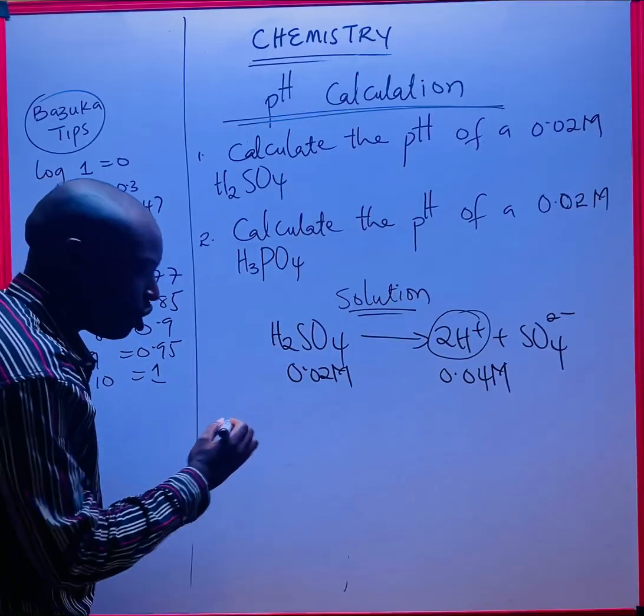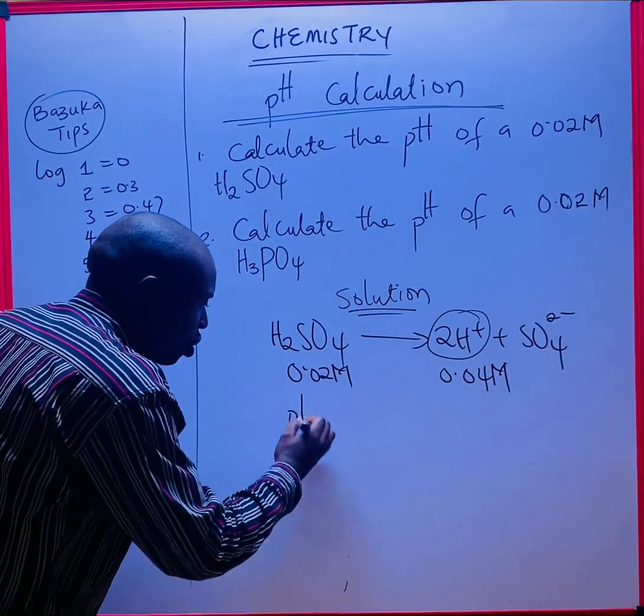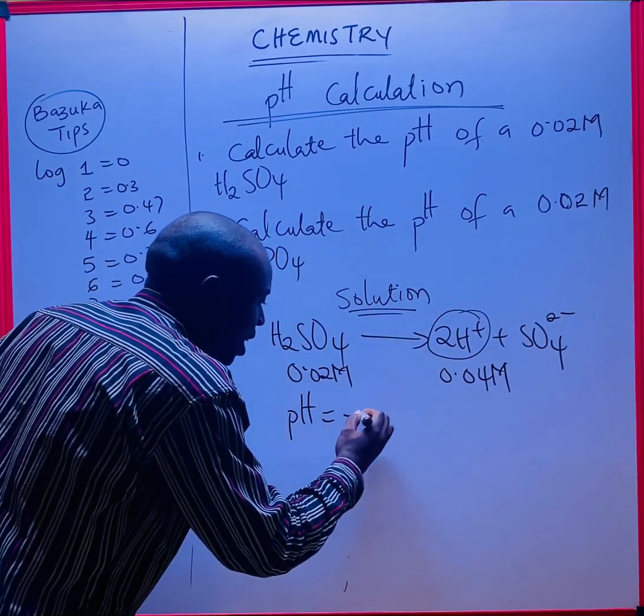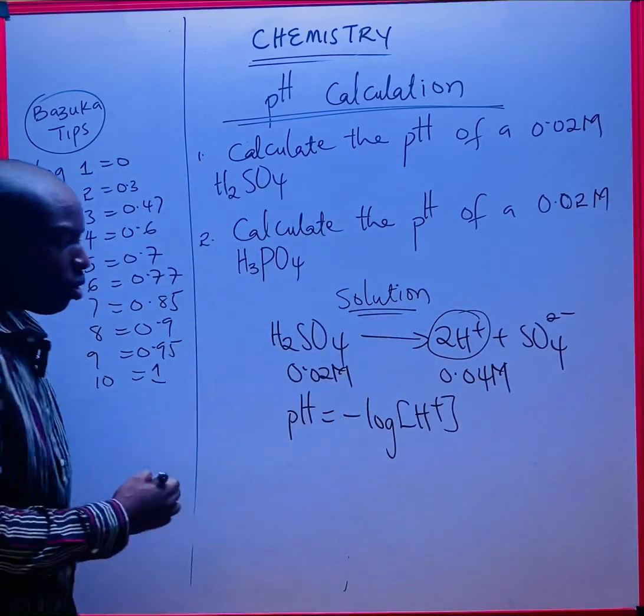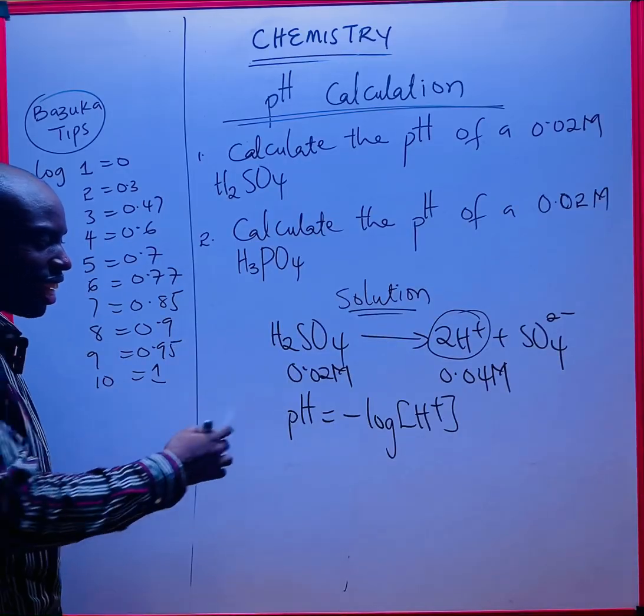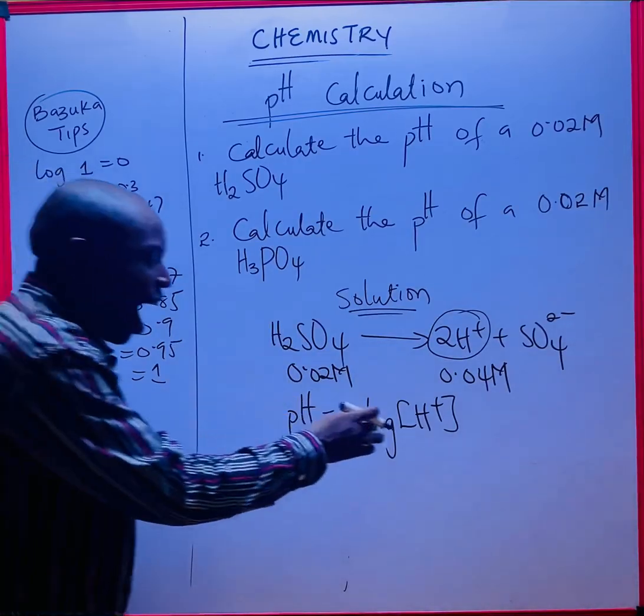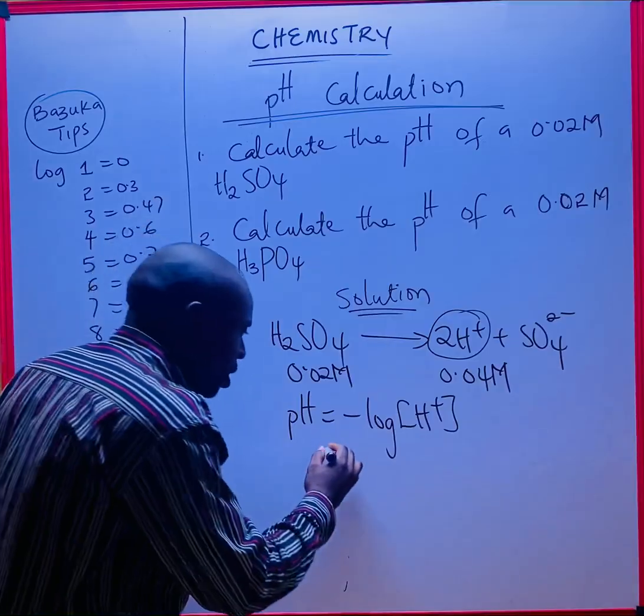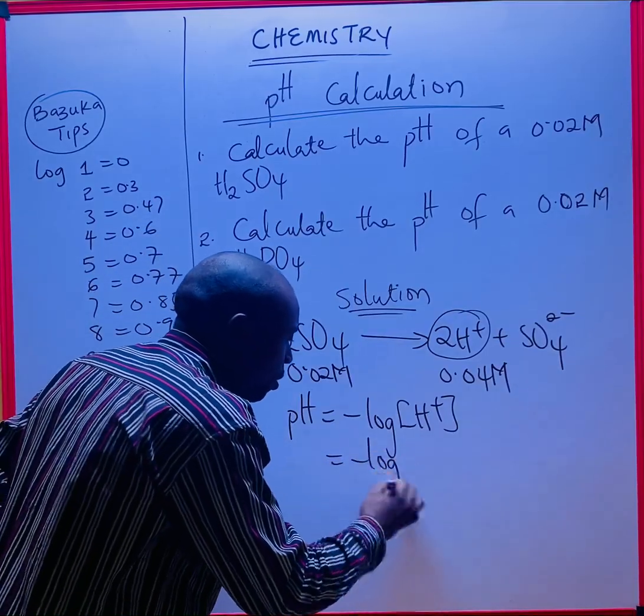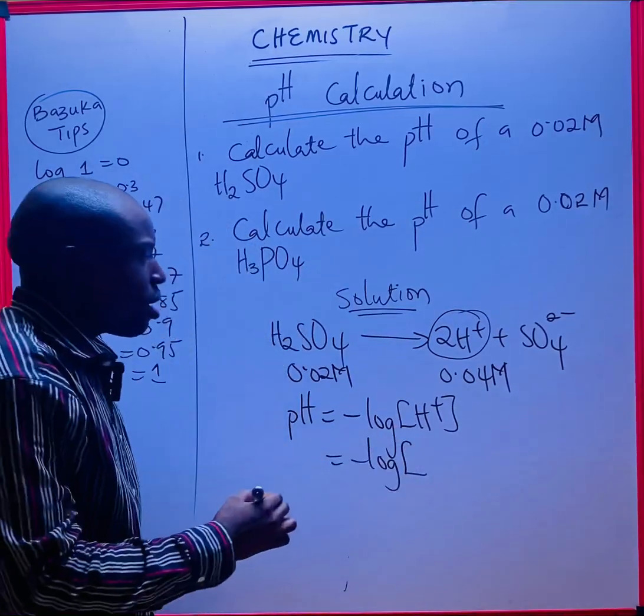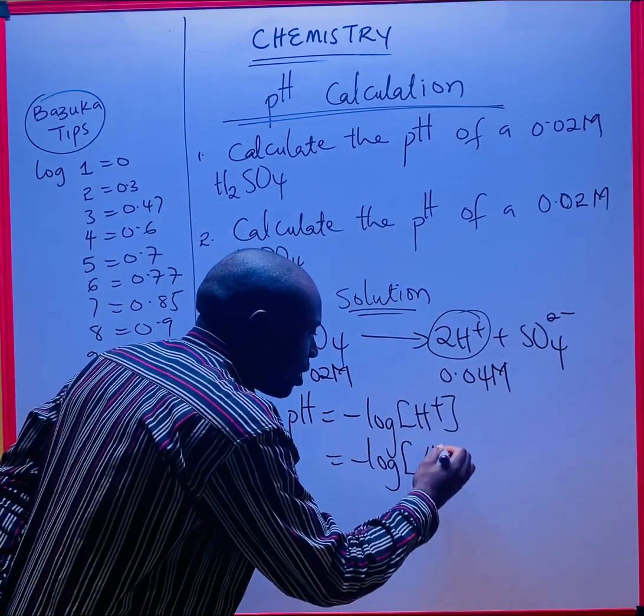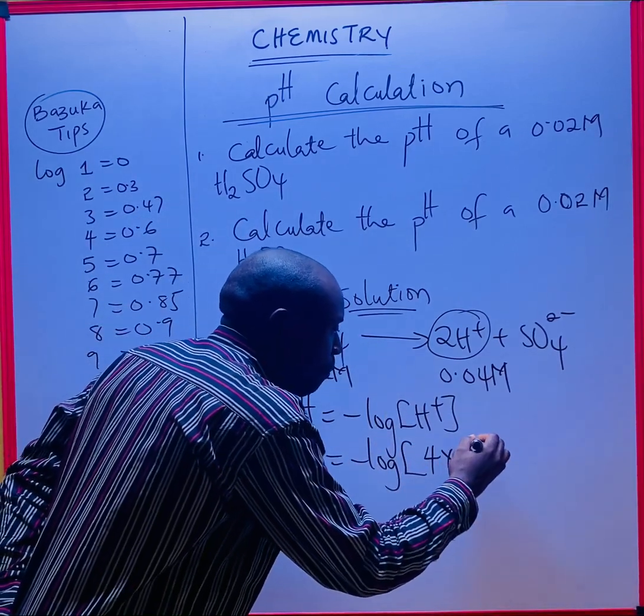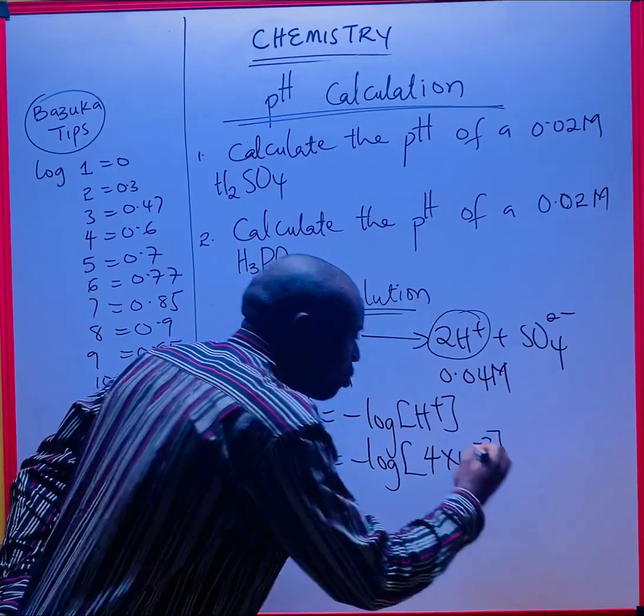Remember the formula for pH: pH is equal to negative log of the hydrogen ion concentration, which is now equal to negative log 0.04. If I'm saying 4 times 10 to the minus 2, this is where my shortcut comes in.